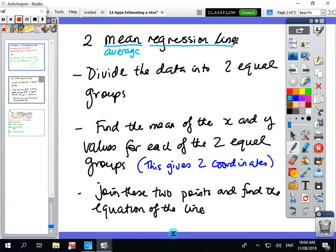So what we're going to do is divide the data into two equal groups and then find the mean of the x and y values for each of the two groups, and this gives us two coordinates. So we're going to get a coordinate for the average of the first set and a coordinate for the average of the second set, and then we're going to join these points and find the equation.